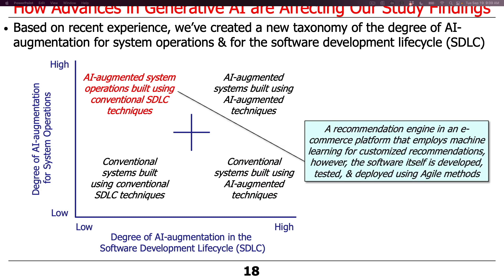Another quadrant is AI-augmented system operations built using conventional software development techniques. A good example would be the recommendation engines on platforms like Amazon or YouTube — a recommendation engine that uses machine learning to map your interests, profile, history, demographics, and location to give you recommendations, while the software itself is developed using conventional agile methods with no AI in the development process.